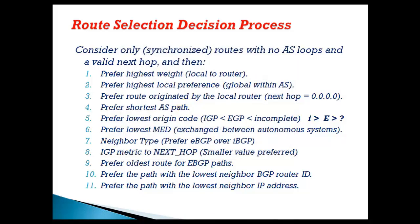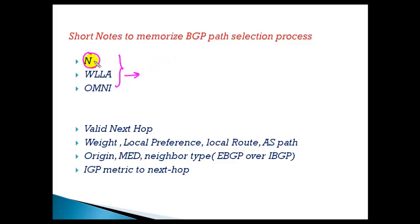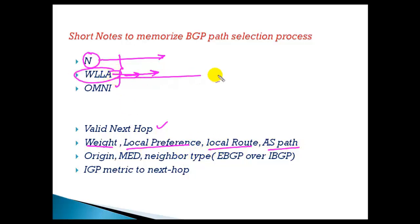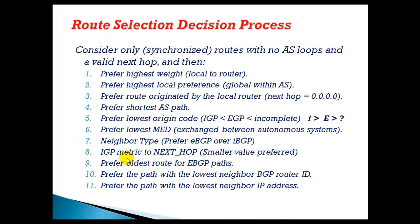To memorize the BGP path selection process, a useful shortcut is: first a valid next hop, then W-L-L-A — Weight, Local preference, Locally originated route, and AS path. If all four are the same, use OMNI: Origin code, MED (metric), Neighbor type (eBGP preferred over iBGP), and then nearest IGP metric. You need to memorize these steps to figure out which route BGP calculates as best when reviewing 'show ip bgp' or 'show ip route bgp'.